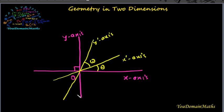When theta equals 0, we will derive the relation between rectangular axis and oblique axis. The case theta not equal to 0 will be discussed in another video. So we redraw this figure for theta equal to 0. When theta equals 0, then the x-dash axis and x-axis are the same axis.